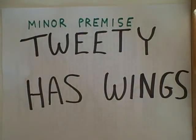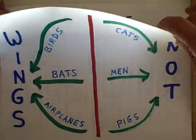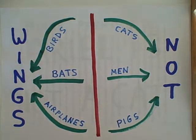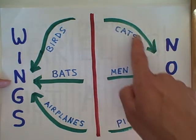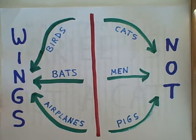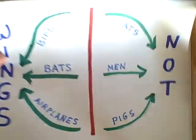Let's try another minor premise yielding a valid conclusion: Tweety has wings. We know that Tweety is going to end up over on this side of the diagram — Tweety has wings. So what we know for sure is that Tweety is not on the cat path, because that leads to not having wings. We don't know for sure that Tweety is a bird, a bat, or an airplane — we just know that Tweety has wings. Therefore, Tweety is not a cat.